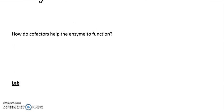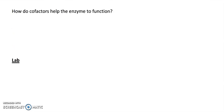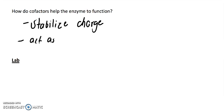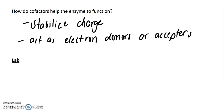So how exactly do cofactors help the enzyme to function? Well in one way they can stabilize charge, and they can act as electron donors or acceptors. And this helps the enzyme do whatever it has to do to the substrate to make the product.